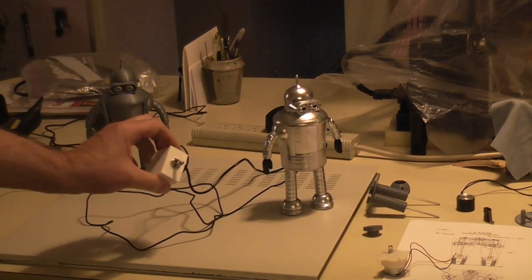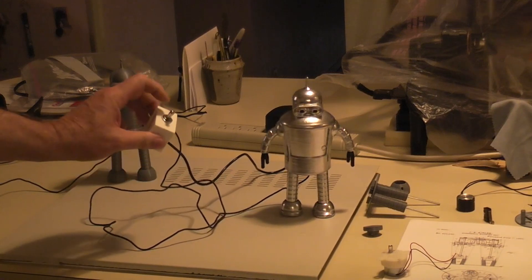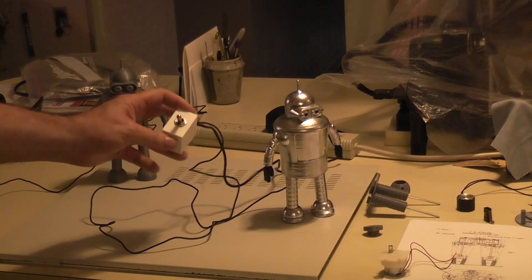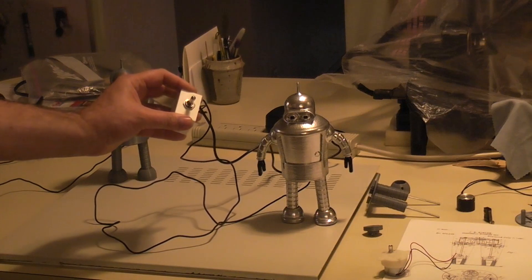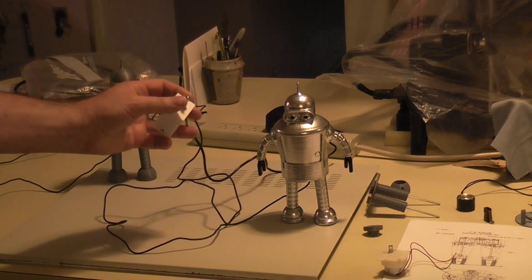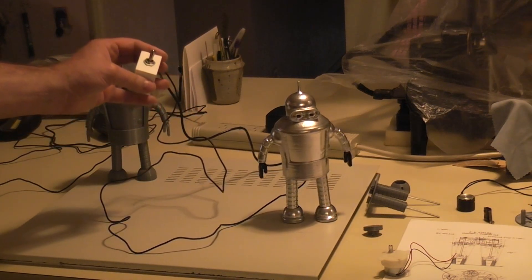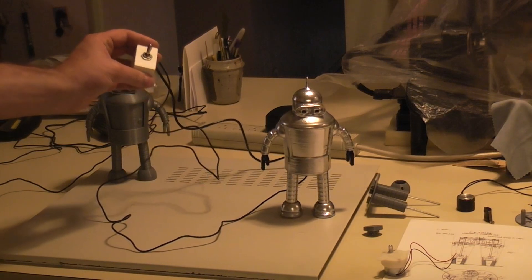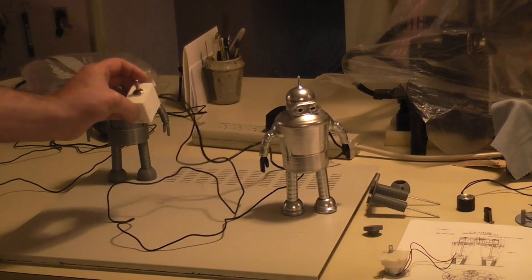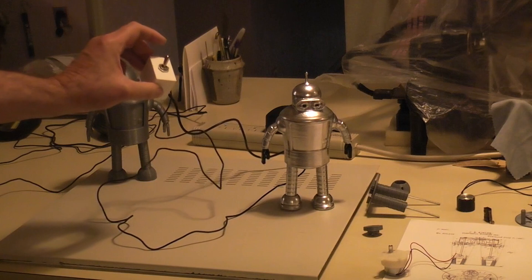To get my forward and backward, I just took a double pole double throw switch that had a center off position, because that way I could also turn the whole thing off. But then if I move the switch in the other direction, it just reverses the voltage so you can get forward and backward all in one unit.